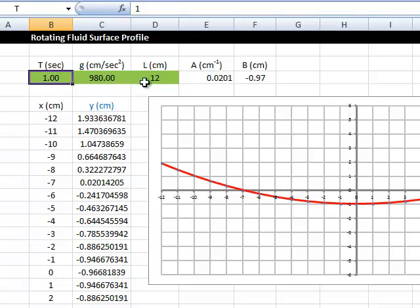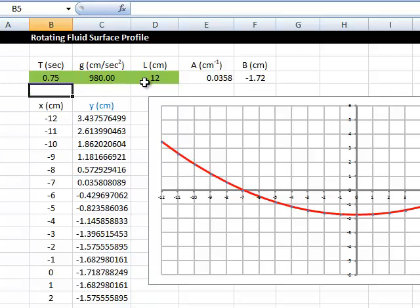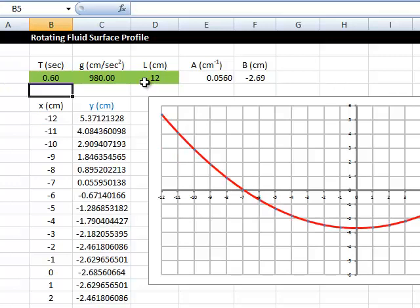And if I change the period, instead of 1 second, if I were to make it 0.75 seconds, it updates the profile. 0.6 seconds updates the profile. I can't go much faster than that because then the water surface is going to hit the top of the tank and the equation is no longer valid then. But let's go ahead and put in 0.95 seconds, which is the period as determined in the video clip used here.